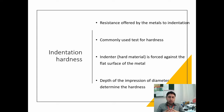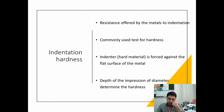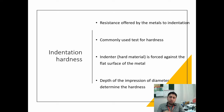Indentation hardness is the resistance offered by the metal to indentation. If we want to make an indentation in the metal and it resists, that is indentation hardness. It is a commonly used test. The indenter is forced against the flat surface of the metal — usually a diamond indenter is used — and we measure the depth or diameter of the impression to determine the hardness.